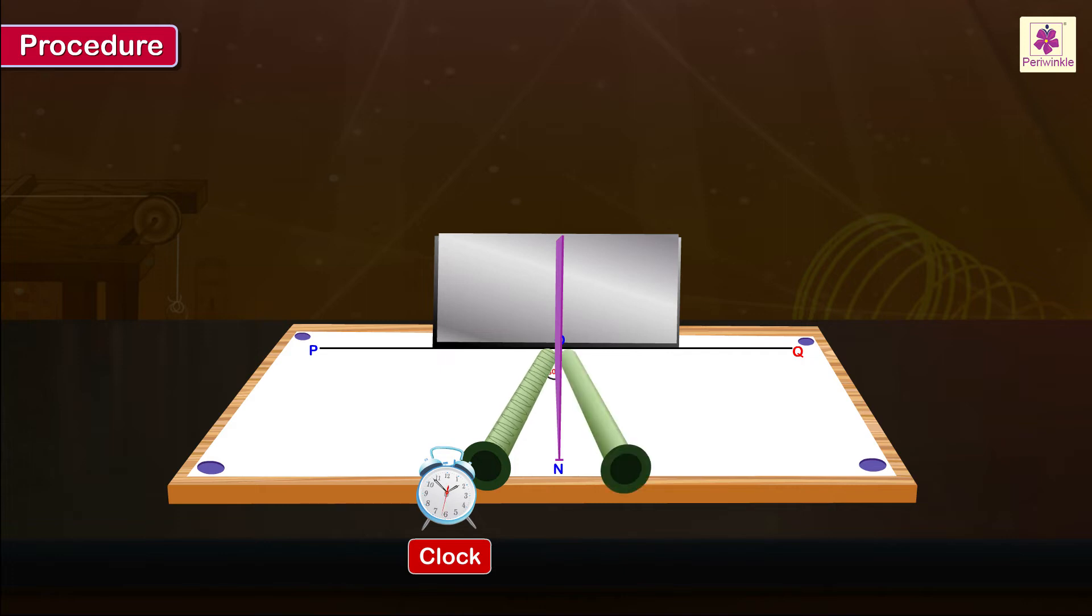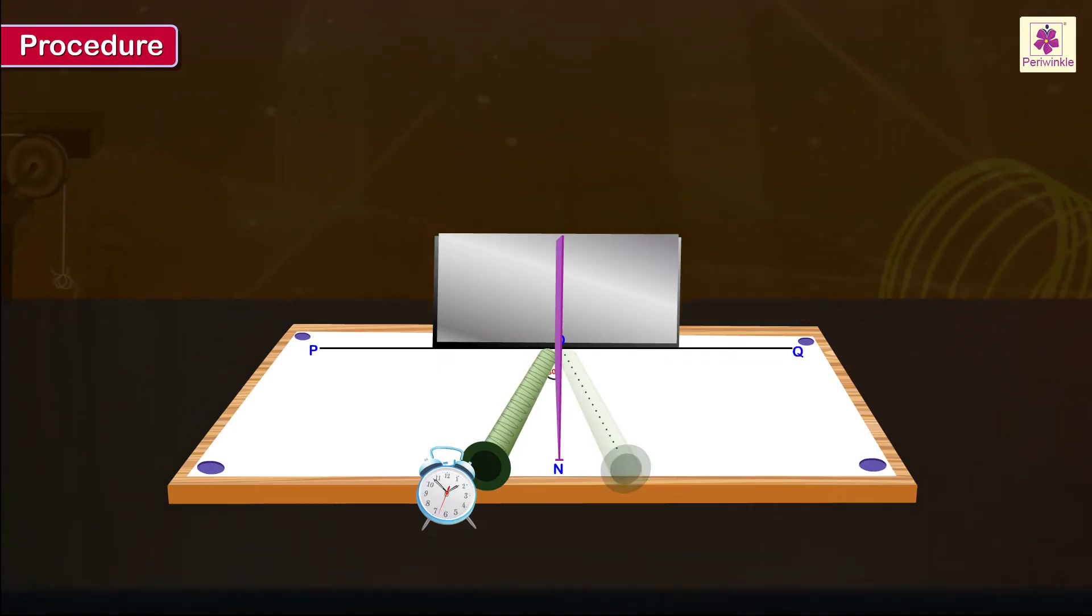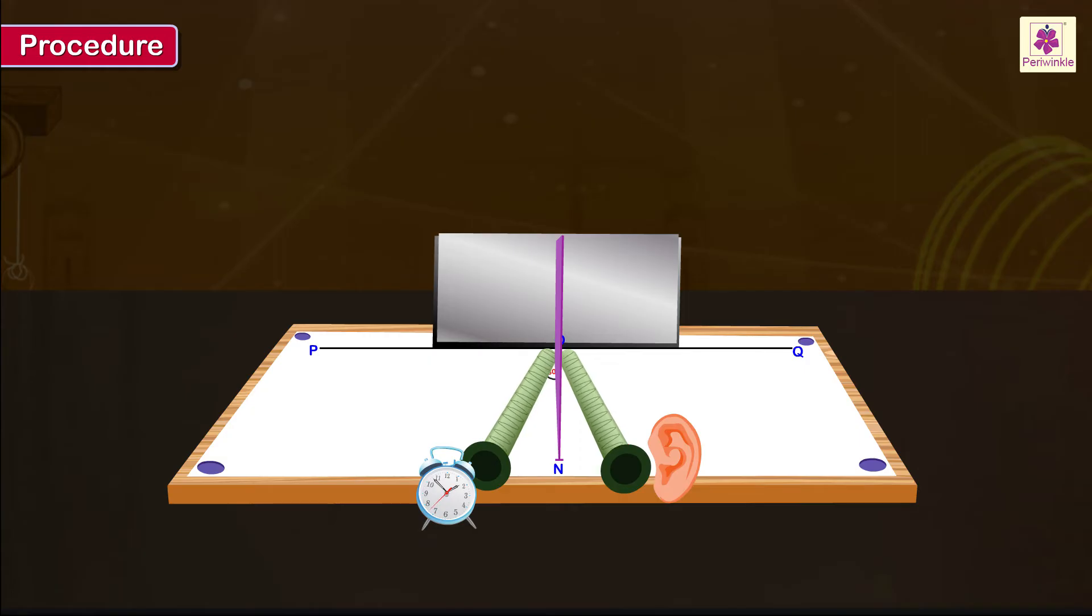Place the second pipe in the interior of angle QON such that the pipe makes angle BON nearly equal to angle AON, point B lying in the interior of angle QON. Hold your ear at the outer end of the second pipe and slowly change its angle to obtain the most distinctly audible tick-tock sound of the clock through the pipe. Use double sided tape to fix the position of the pipe.